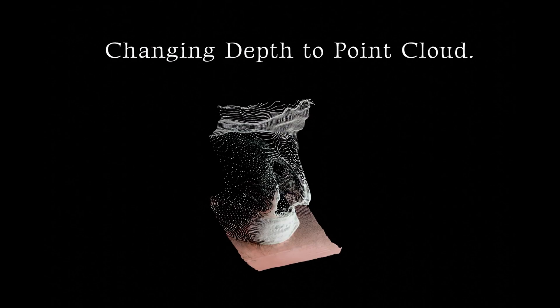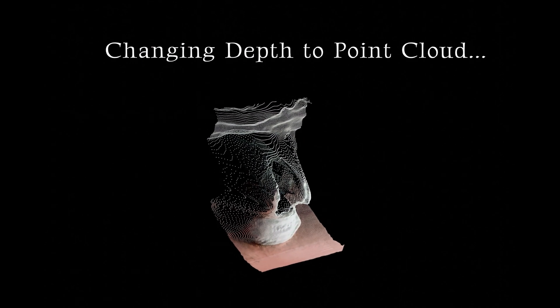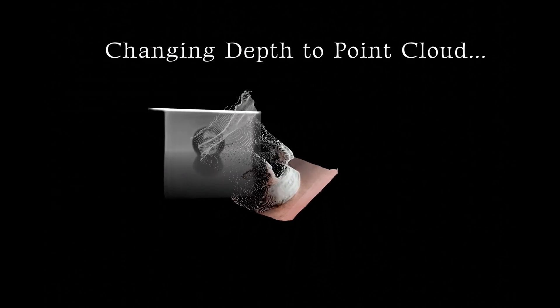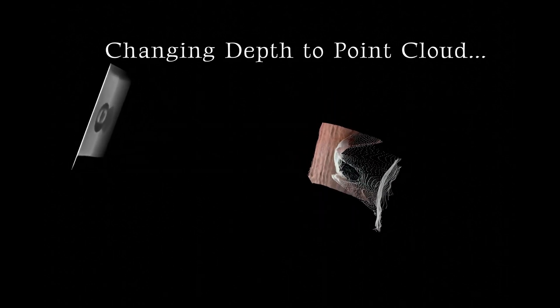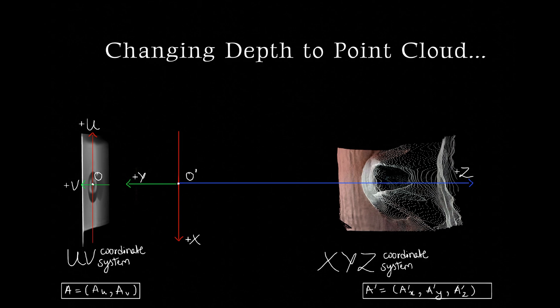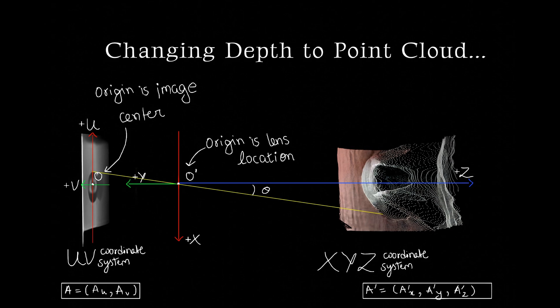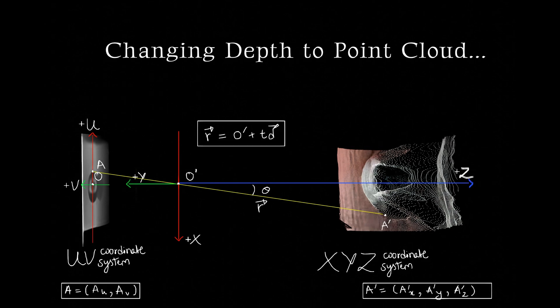Next, we will convert the depth image into a point cloud. Let's imagine the point cloud in a 3D space and embed the 2D depth image in this 3D space. At the origin of this 3D space is the sensing device, conveniently located at O'. Every point A' in the point cloud corresponds to pixel A in the depth image.